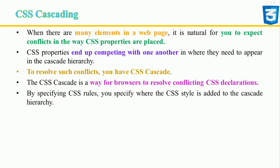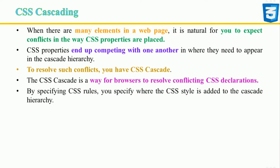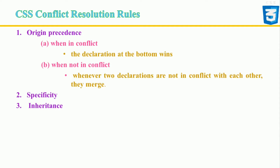When there are many elements in a web page, CSS properties end up competing with one another in the cascade hierarchy. To resolve such conflicts you have the CSS cascade — a way for browsers to resolve conflicting CSS declarations. The cascade algorithm's job is to select the CSS declaration in order to determine the correct value for CSS properties for each document element.